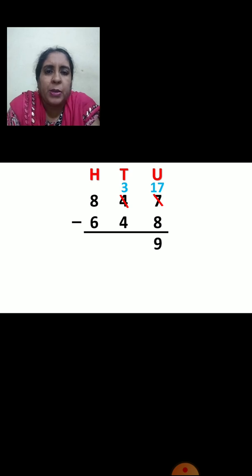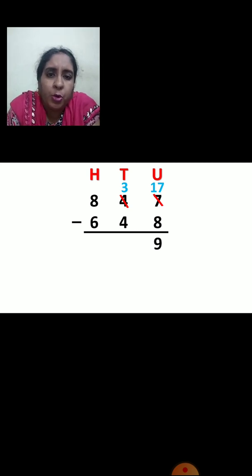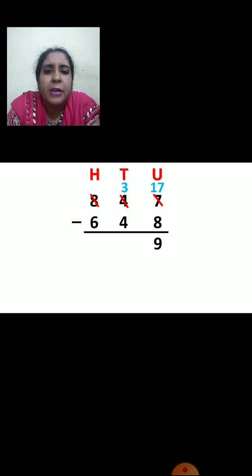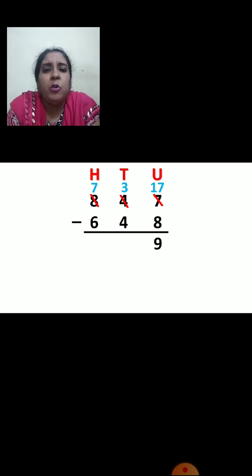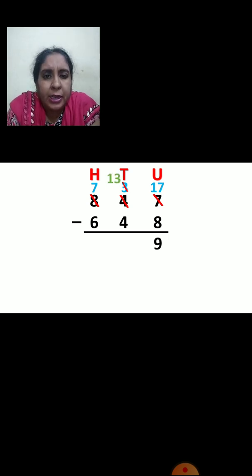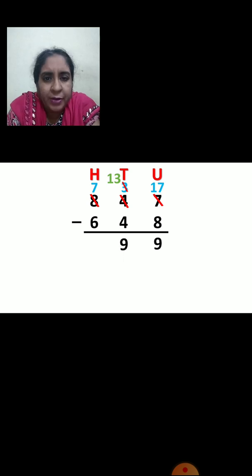Now we will go to tens place. We see three and four. You cannot subtract four from three. So you will go to hundreds place. The hundreds place number is eight, so you cut eight. Eight minus one will be seven. Now you can borrow from hundreds place to tens place, so cut three and tens place becomes thirteen. Thirteen minus four is nine.